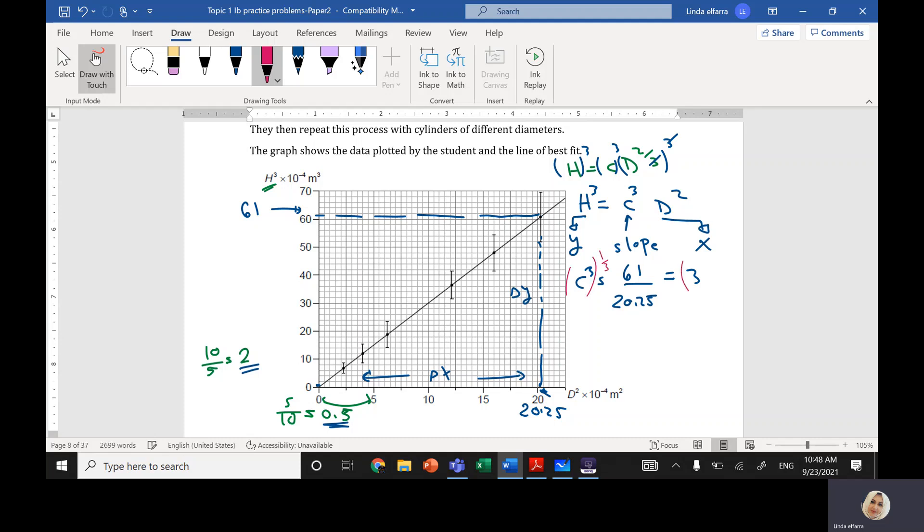To the third, the cube root. So I'll have c equals 3 to the power 1 over 3, and this will give me 1.54. What will be the unit of c, the slope? What will be the unit of the slope?